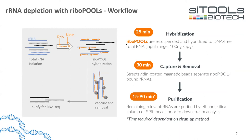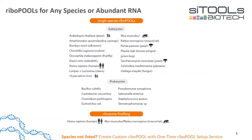The Ribopool is a hybridization-based tool. The transcriptome contains rRNA and other RNAs. Our Ribopool DNA oligos are biotinylated and hybridize to the rRNA. Streptavidin-coated magnetic beads are then added — since biotin binds to streptavidin — allowing capture and removal of ribosomal RNA, leaving purified RNA ready for RNA sequencing. The entire workflow takes around 70 minutes and is fast and easy.